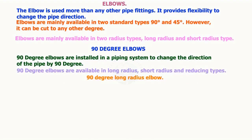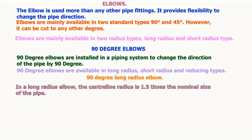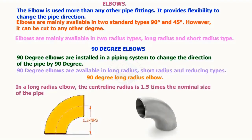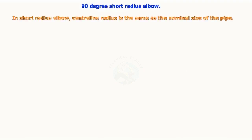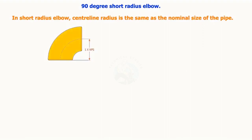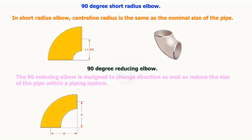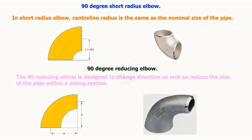In a long radius elbow, the centerline radius is 1.5 times the nominal size of the pipe. The 90-degree reducing elbow is designed to change direction as well as reduce the size of the pipe within a piping system.